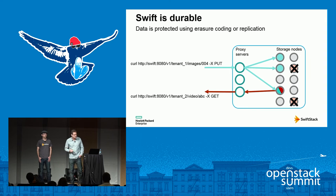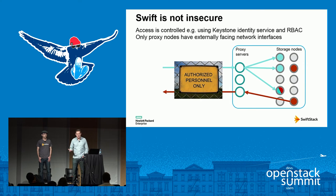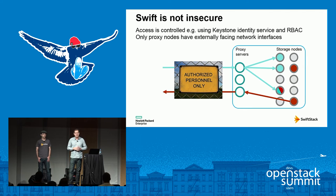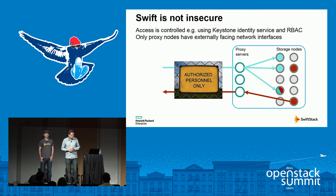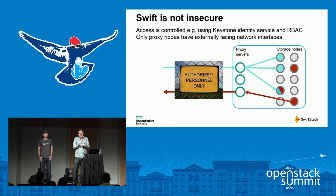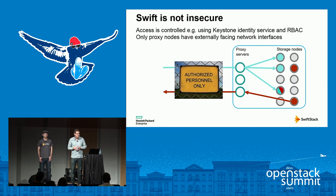With the work we're describing this morning, we're making Swift more secure. I emphasize the word 'more' because Swift has not been an insecure service prior to adding encryption. Swift takes advantage of the Keystone Identity Service to authenticate every request that arrives at its API and to authorize operations on objects. Every request is handled by the proxy servers, which means the much larger pool of storage nodes are completely isolated from any public-facing network interface.